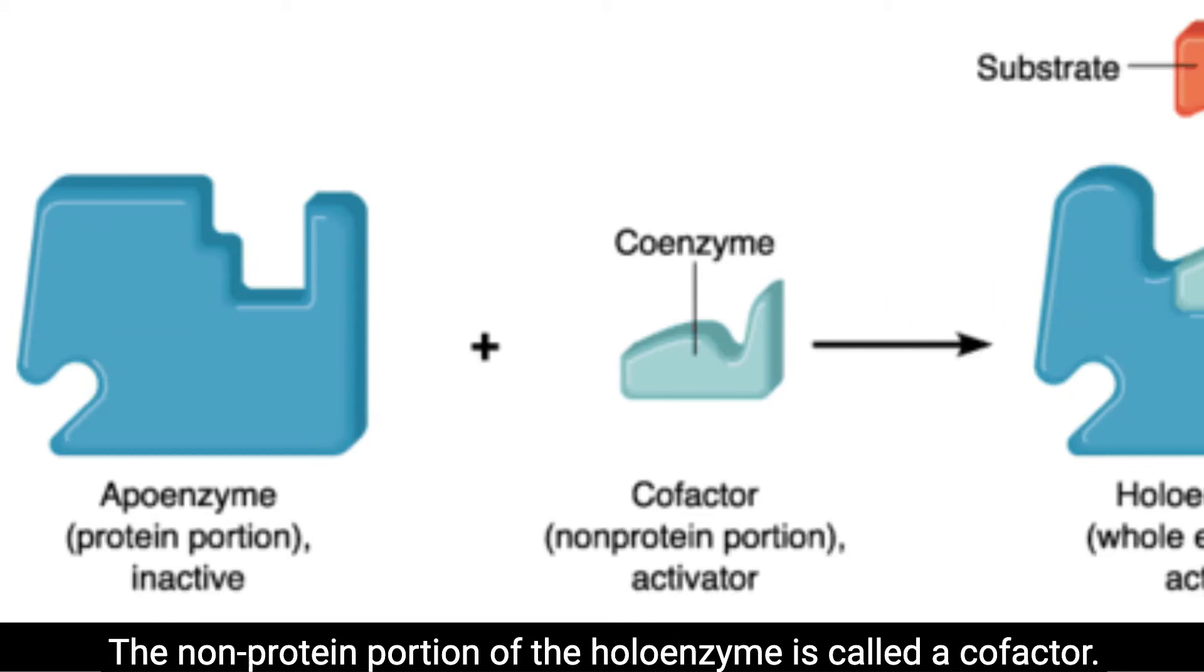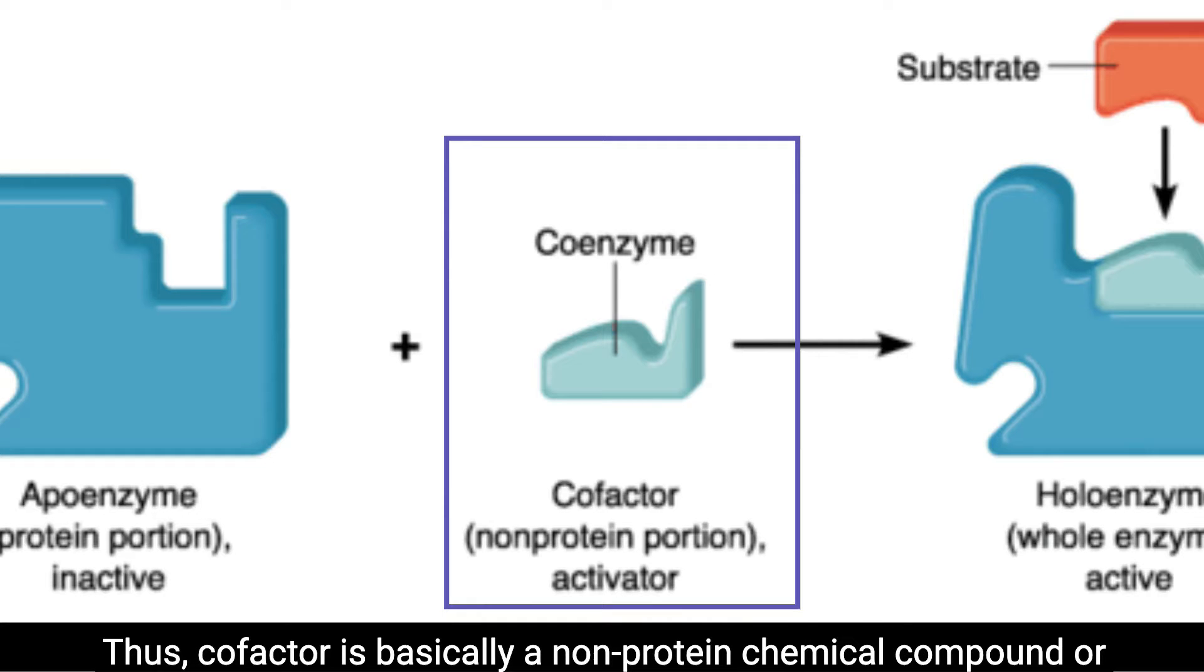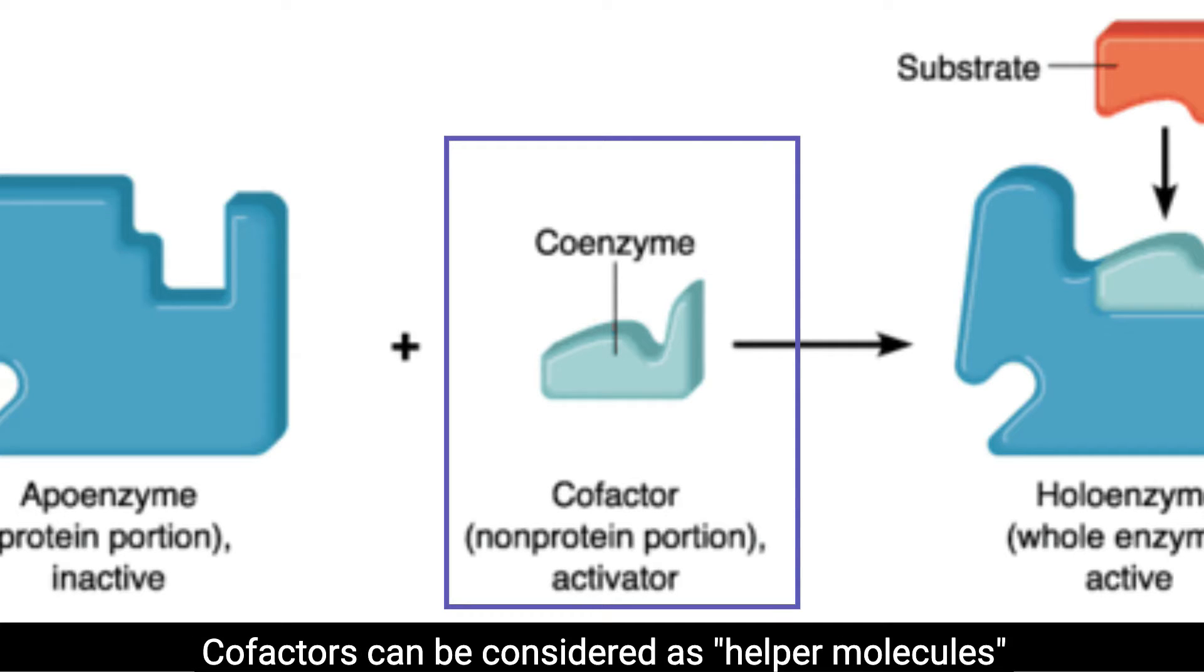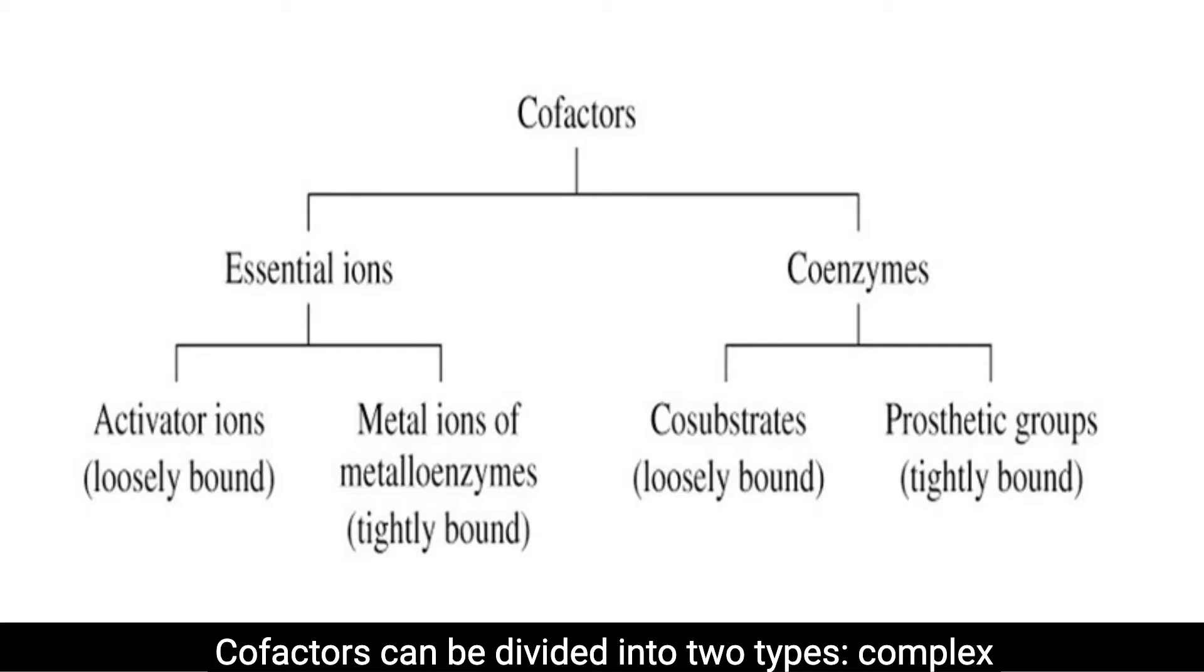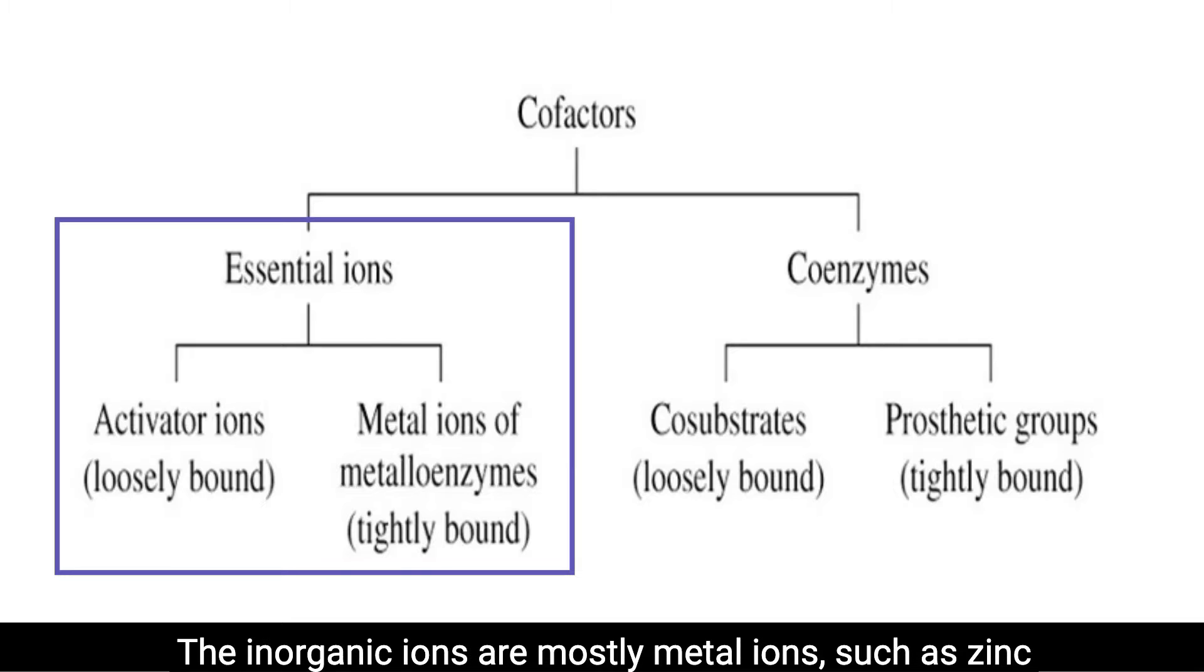The non-protein portion of the holoenzyme is called a cofactor. Thus, cofactor is basically a non-protein chemical compound or metallic ion that is required for an enzyme's activity as a catalyst. Cofactors can be considered as helper molecules that assist in biochemical transformations. Cofactors can be divided into two types: complex organic molecules called coenzymes and inorganic ions. The inorganic ions are mostly metal ions, such as zinc or iron, and comprise the metals in metalloenzymes.